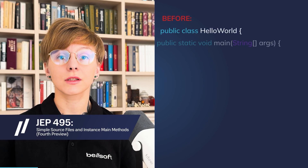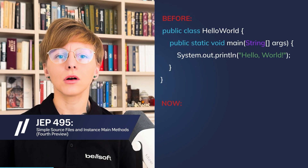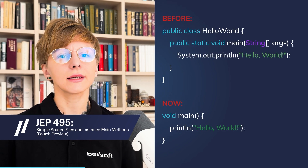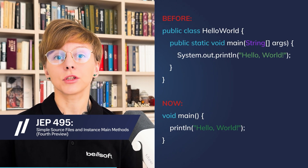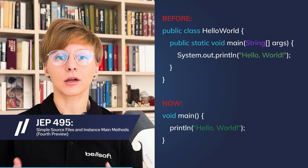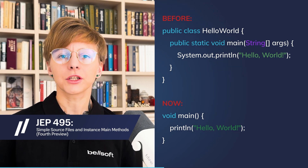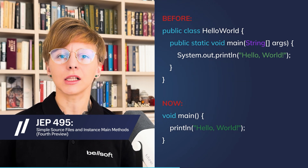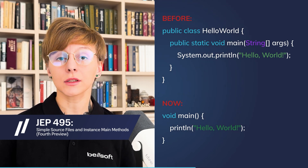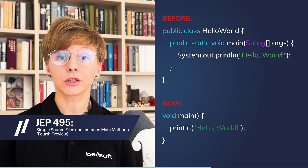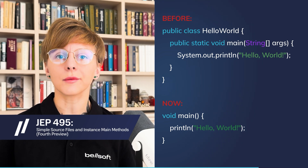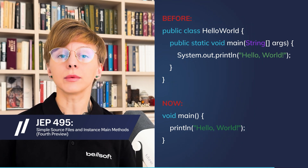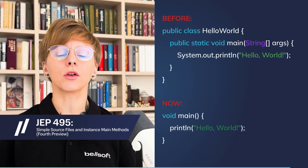JEP 495 introduces a fourth preview of simple source files and instance main methods, with a few changes to the terminology and the title. This feature enables developers who have just started their Java journey to write single-class simple programs without complicated Java concepts.